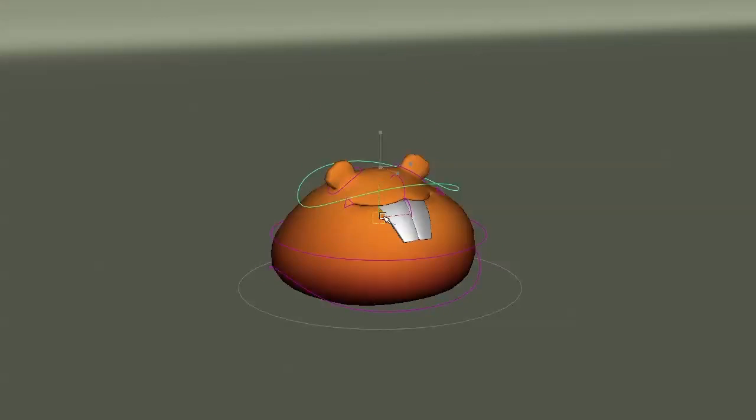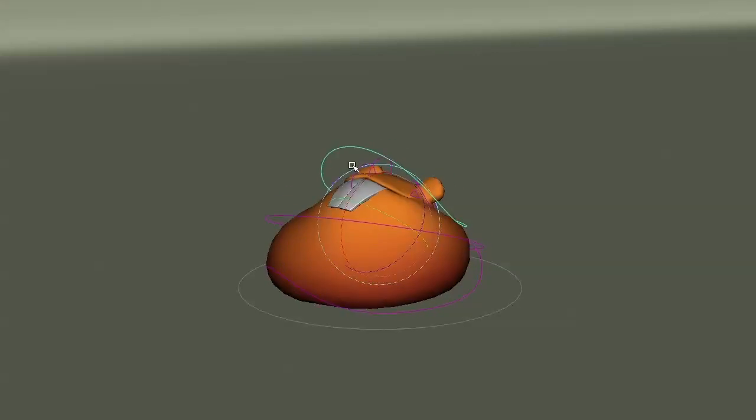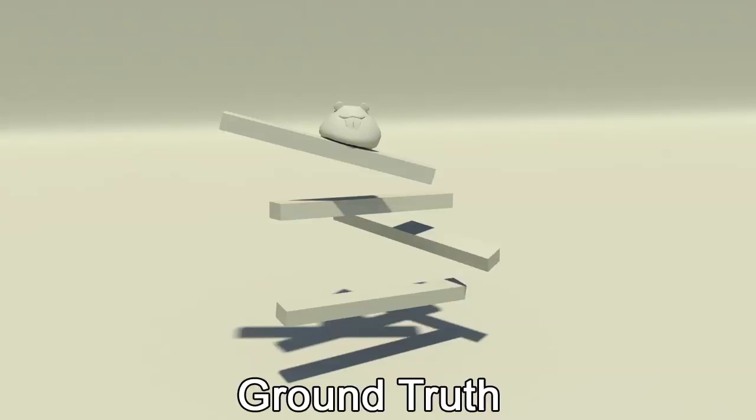This squishy character has no skeleton, so instead we place virtual joints at each mesh vertex. We then perform soft body simulation on the character mesh to get new joint positions. These are mapped back to the rig for editing by the animators.